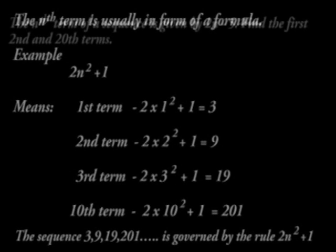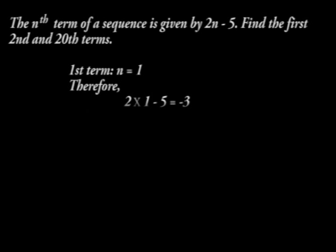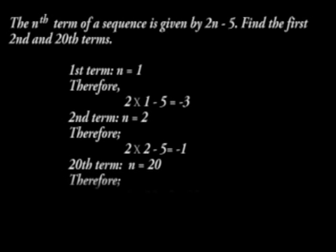For example, the Nth term of a sequence is given by 2N minus 5. Find the first, second and twentieth terms. In our solution, in the first term, N is equal to 1. Therefore, the first term is 2 times 1 minus 5, which is equal to minus 3. We follow the same for N equals 2 and N equals 20.